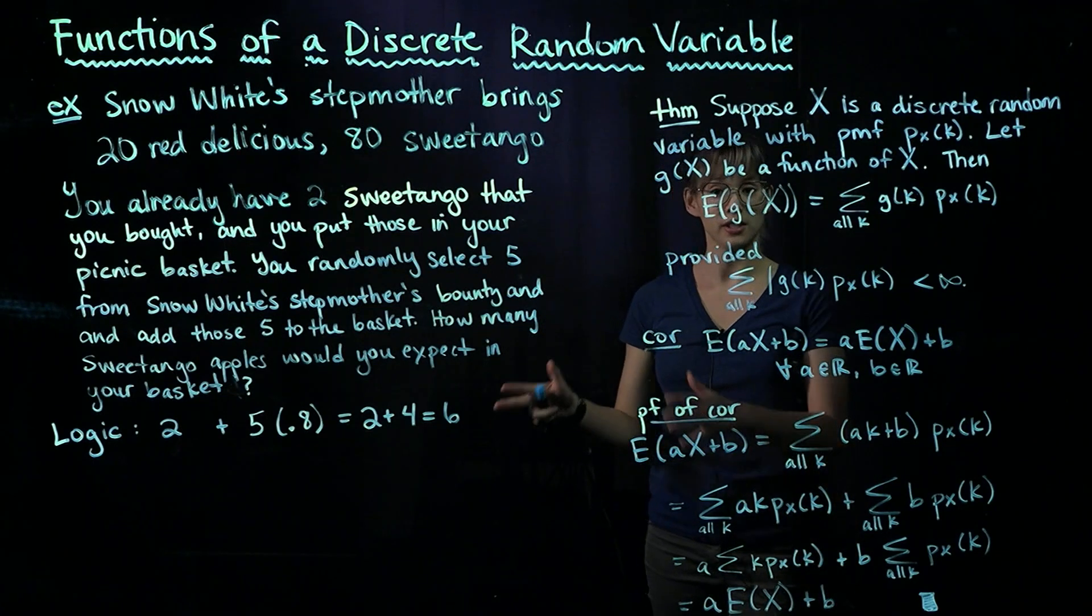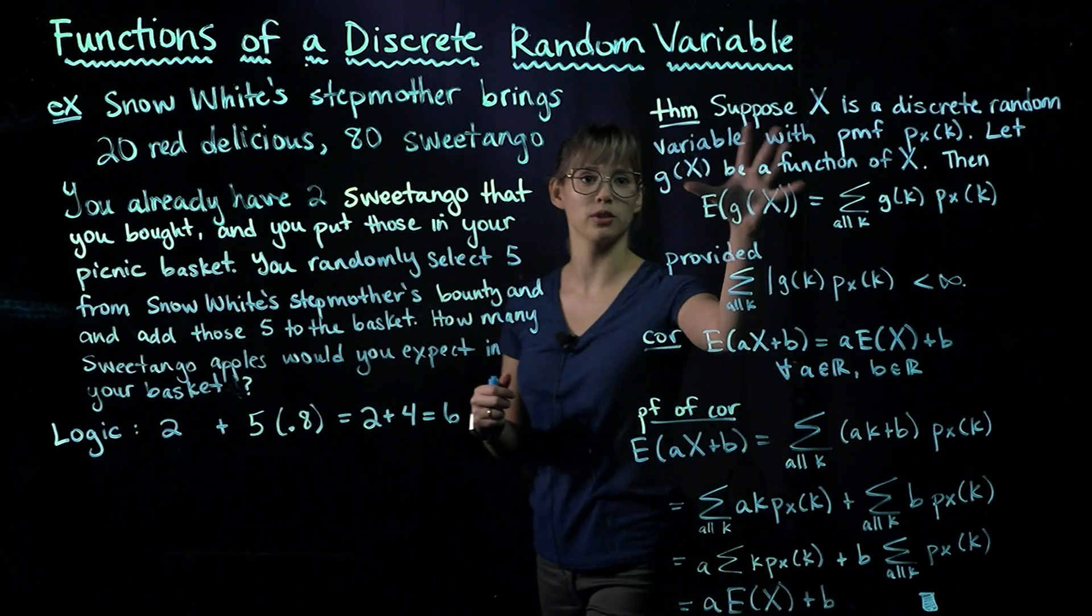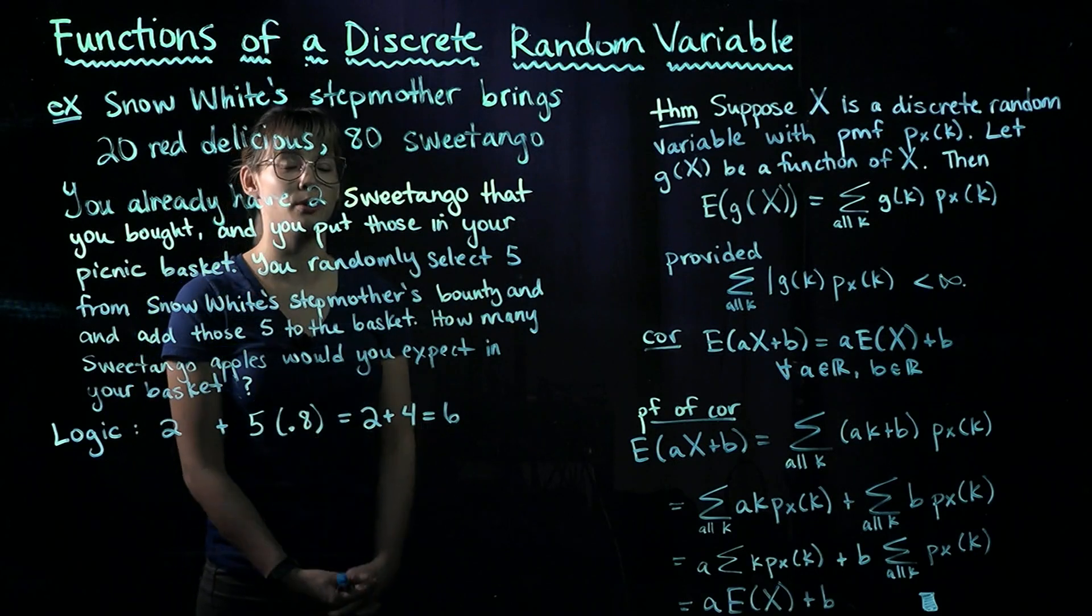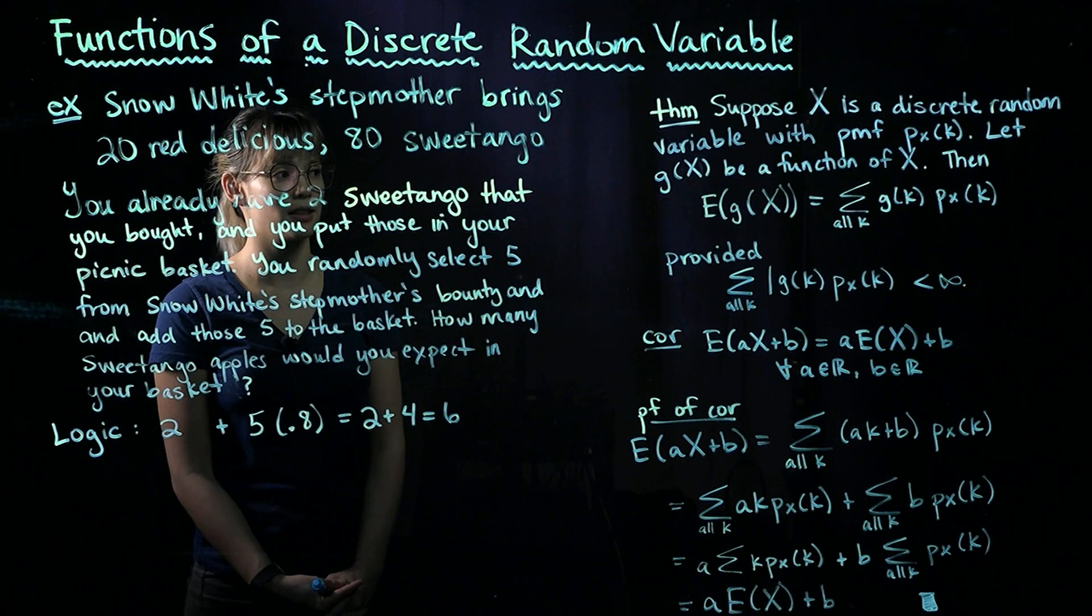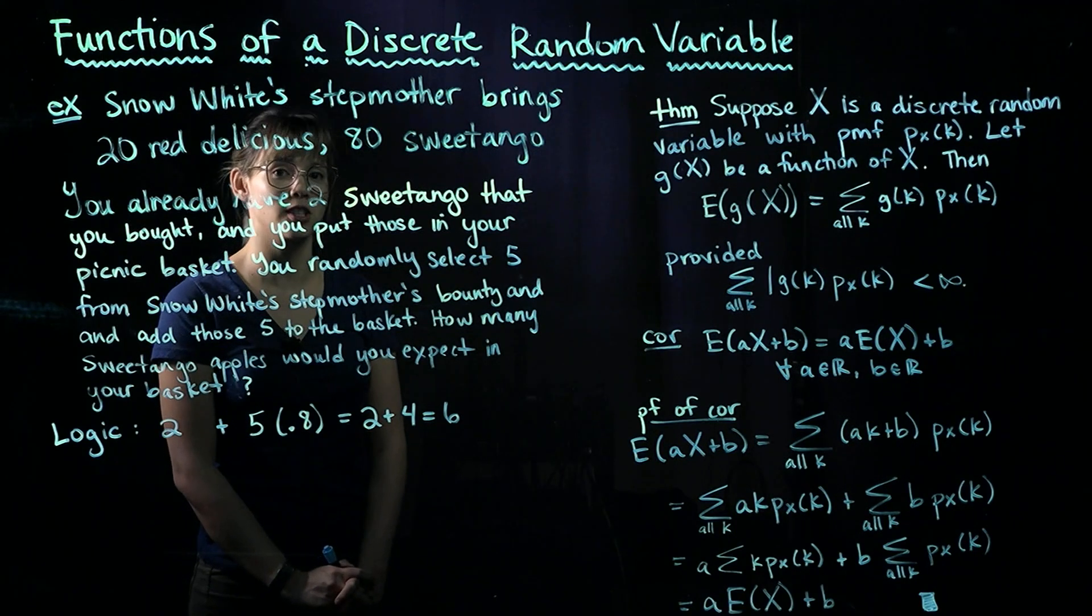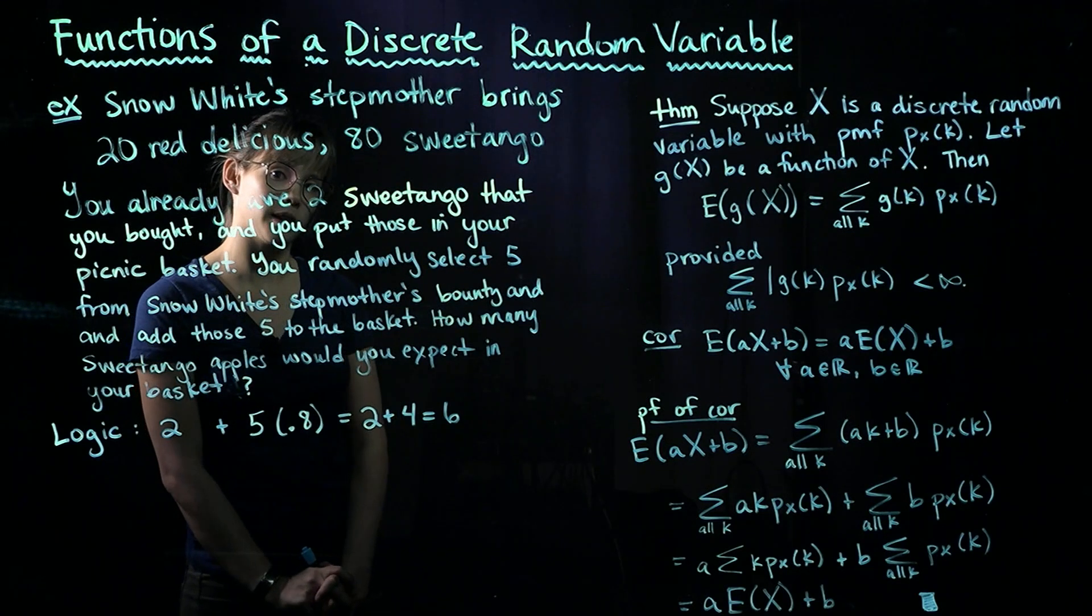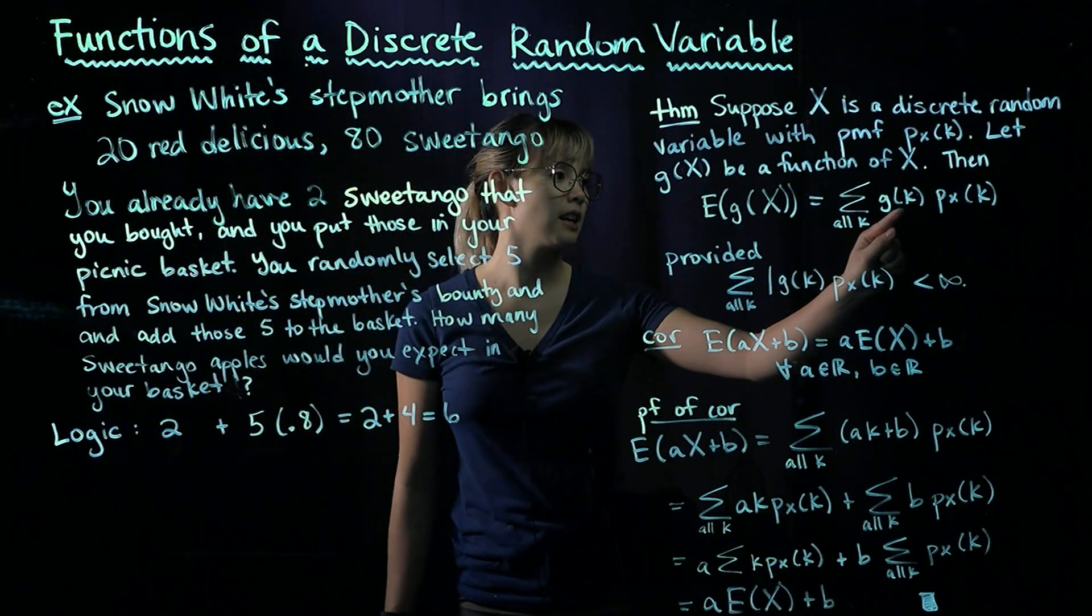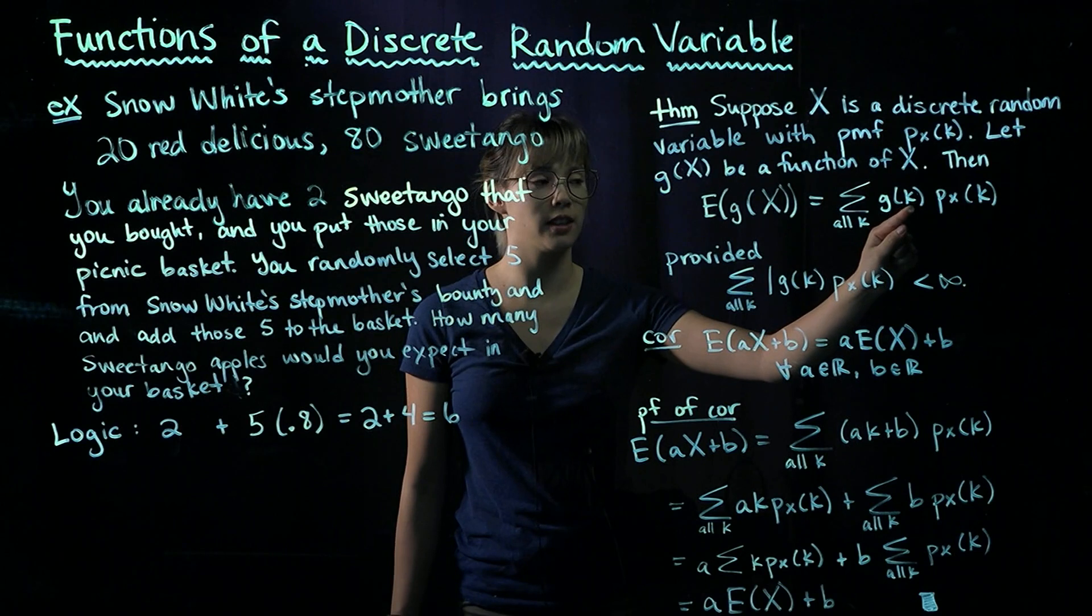This is correct, but let's generalize this to a theorem for any discrete random variable. Let X be a discrete random variable with PMF p_X(k). Then we're going to define G(X) to be a function of our random variable X. If we want to calculate the expected value of G(X)...